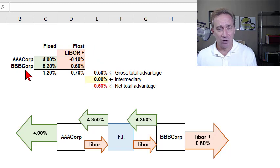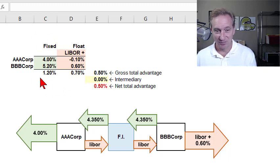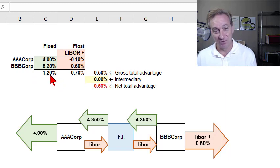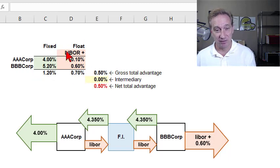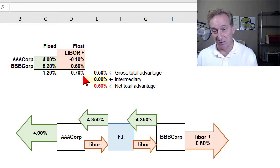We can summarize the situation in terms of comparative advantage. AAA Corp has a comparative advantage in fixed rate markets, paying fully 120 basis points less than BBB Corp there. Perhaps less intuitively, BBB Corp enjoys a comparative advantage in floating rate markets, where its additional spread is only 70 basis points instead of 120 basis points.